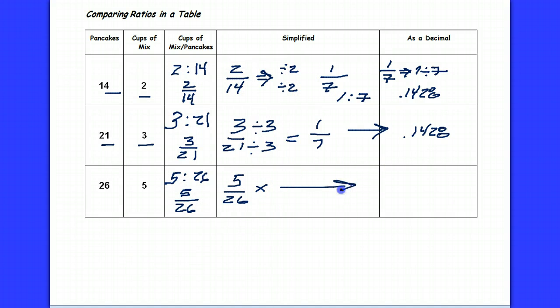So 5 divided by 26 is 0.1923. I do not end up with the same decimal equivalency, and I do not end up with the same simplified ratio for all three of these.